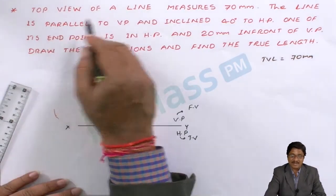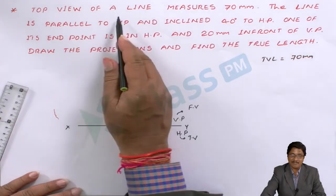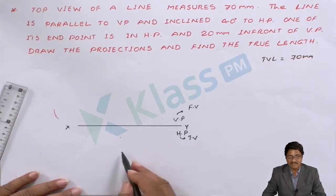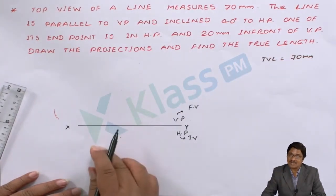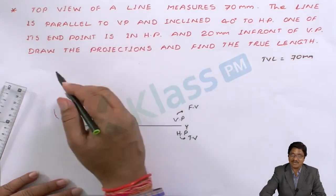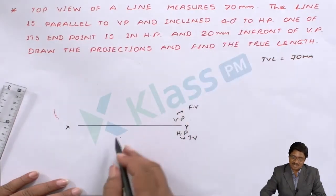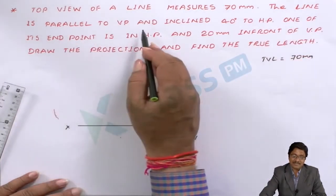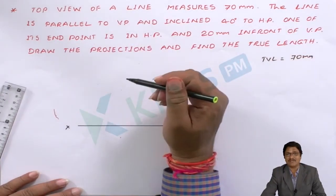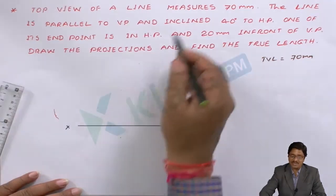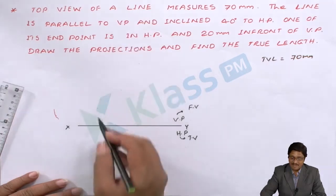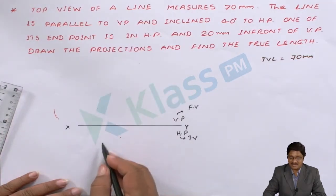Just read the problem and observe what is given. Top view of a line measures 70 mm — that means the top view is to be drawn in HP with 70 mm length. The line is parallel to VP, and VP details appear in the top view. So we have to draw the top view as 70 mm in length. But in which direction? The line is parallel to VP — but where exactly to draw it parallel?